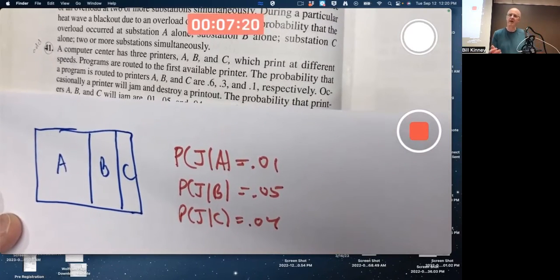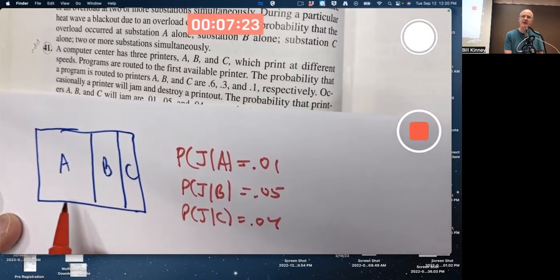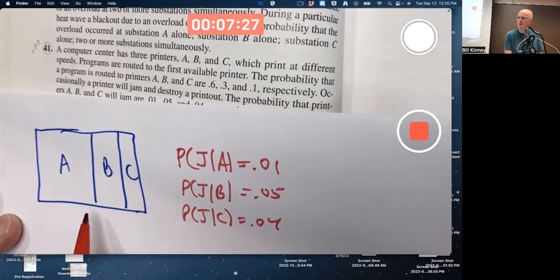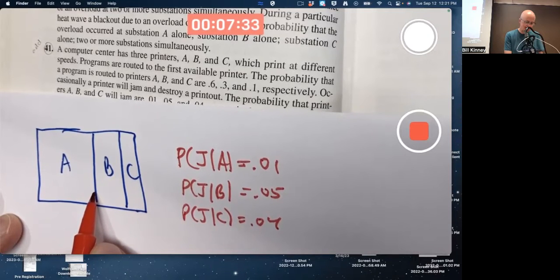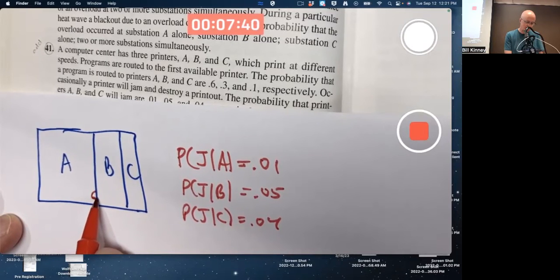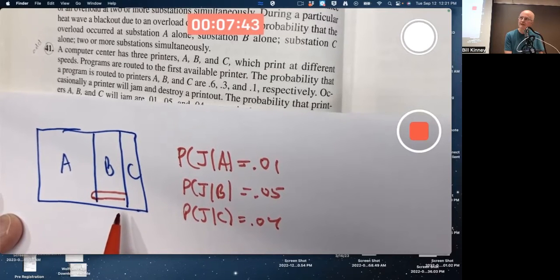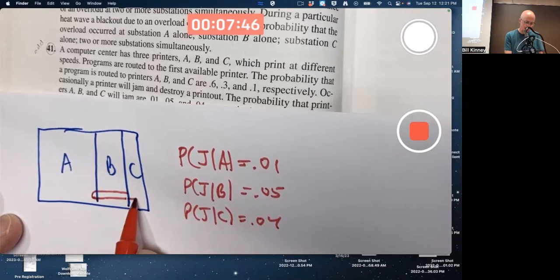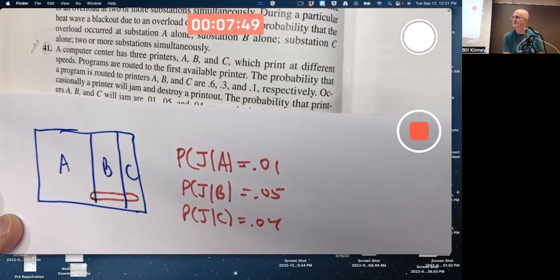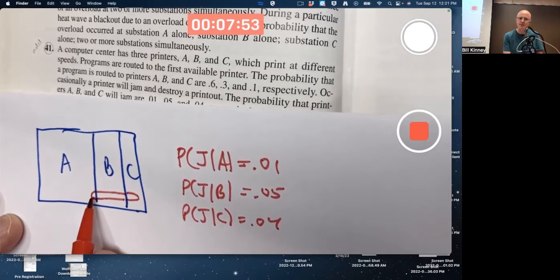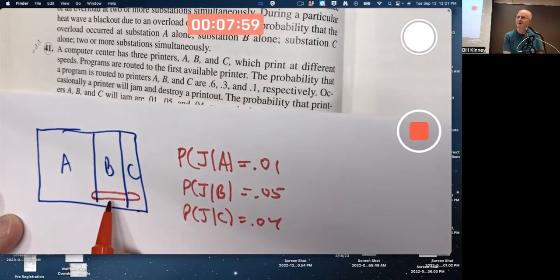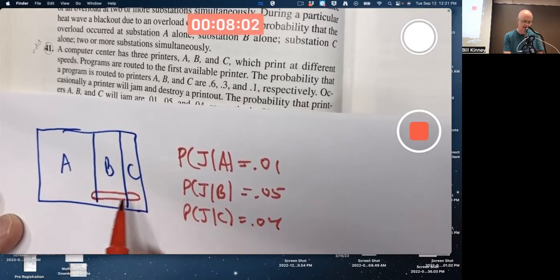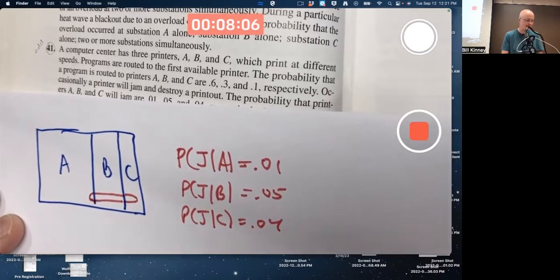And once again, if you want to think in terms of areas, if I want to make the jamming event in red, well, I should make it fairly small. Usually the jobs don't jam. I'd want to effectively make something that's, say, 1% of A's area, maybe about that big. 5% of B's area, it might be about that big. And 4% of C's area, maybe you cut it off about there to make it look like it's about 4% of C's area. This little area right here is supposed to be 1% of the entire area of A because of that. This area is supposed to represent 5% of the area of the B region. And this area is supposed to represent 4% of the area of the C region.